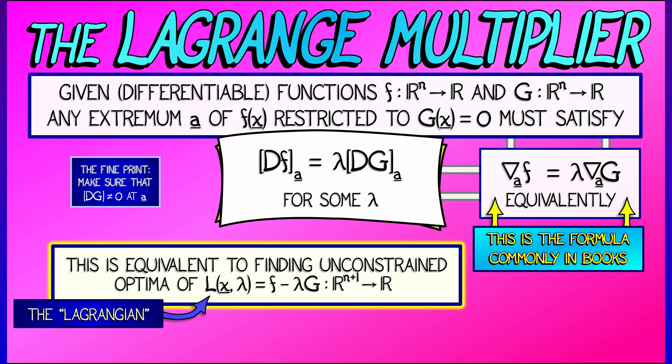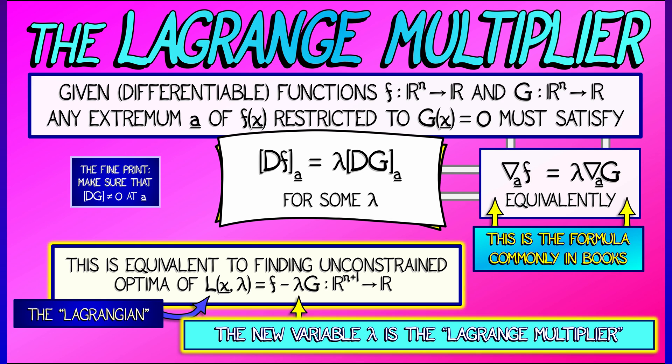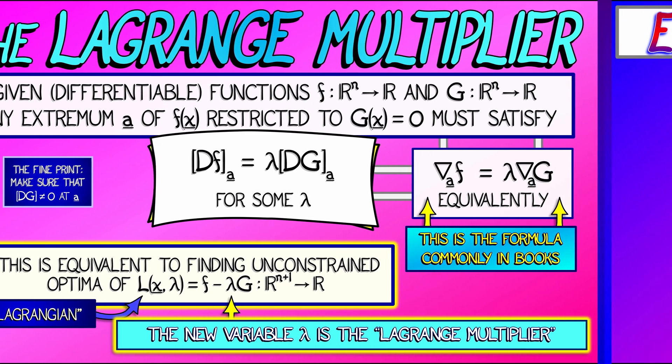This function L is given by f minus lambda times g, where this new variable lambda is called the Lagrange multiplier. That's French, Lagrange. Not Lagrange. Don't say that. Lagrange.